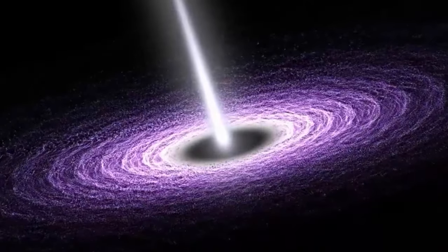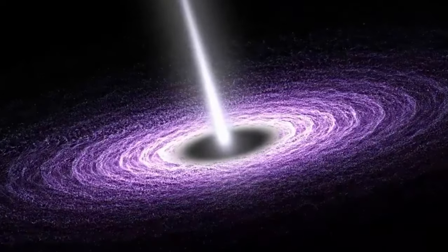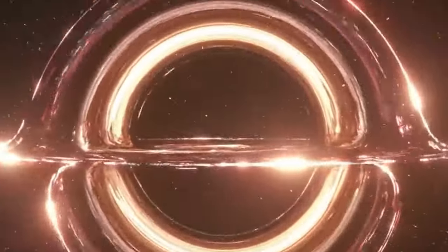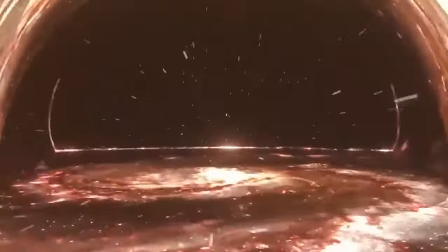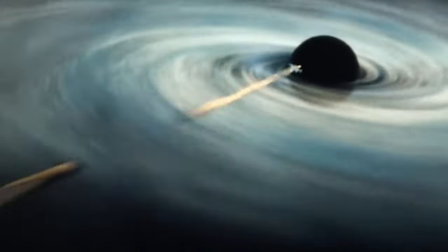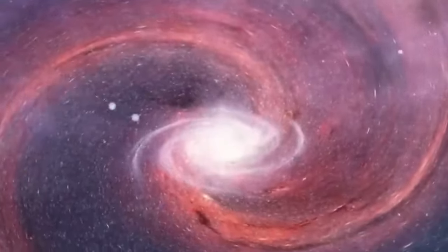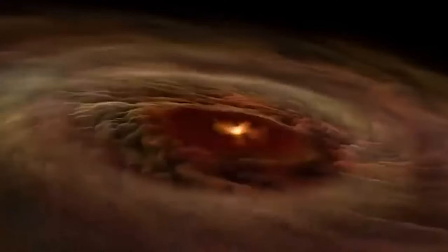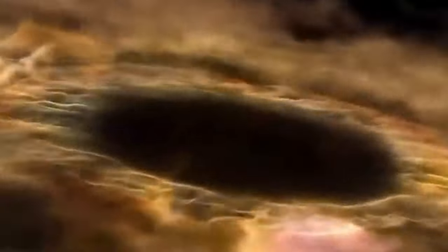Additionally, the extreme gravitational pull near a black hole leads to a phenomenon known as time dilation, predicted by Einstein's theory of general relativity. As objects approach the event horizon, time appears to slow down relative to observers farther from the black hole. While studying black holes directly is challenging due to their event horizons, their influence on surrounding space, such as gravitational lensing, provides crucial clues about their existence and characteristics.